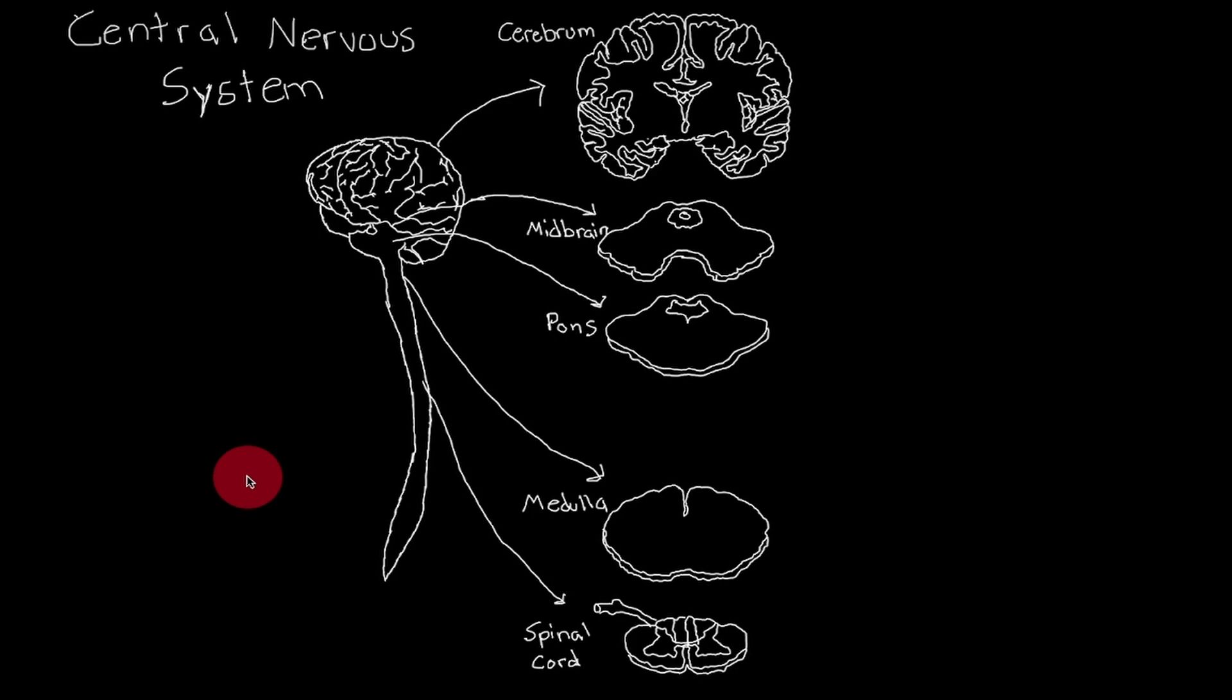As you can see here, we have cross sections of the spinal cord, medulla, pons, midbrain, and cerebrum.